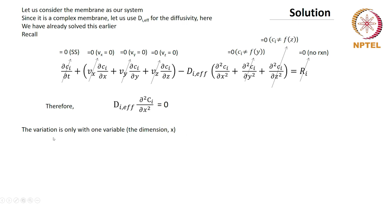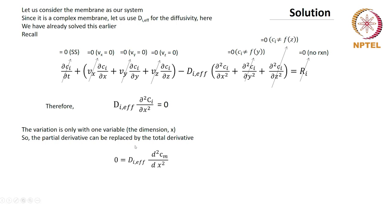The variation is only in one dimension, so one variable is sufficient. We can convert the partial derivative to a total derivative since there is only one variable. Total differential equations are easier to solve than partial differential equations. So the equation becomes: DI_eff × (d²cm/dx²) = 0, equation 2.4.1-1. To solve any differential equation you need boundary conditions. This is a second order differential equation, so you need two boundary conditions with respect to space: at x equals 0, cm equals kC0; and at x equals d, cm equals kCl.